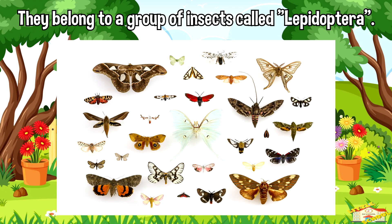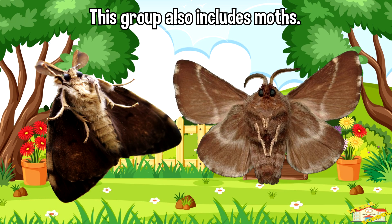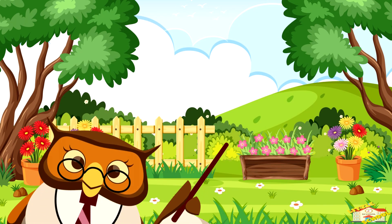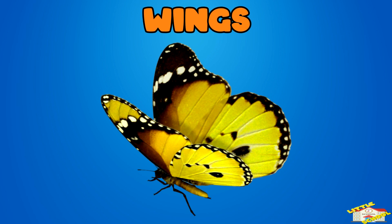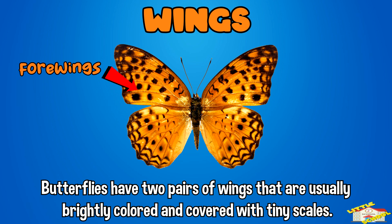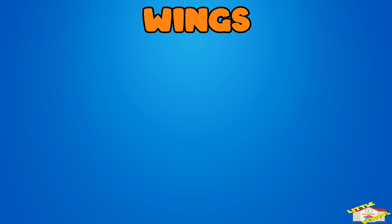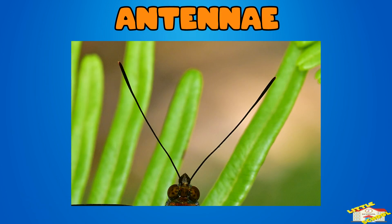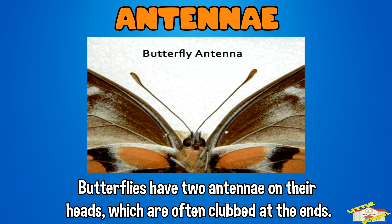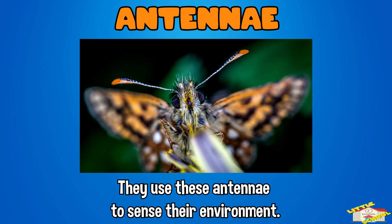They belong to a group of insects called Lepidoptera. This group also includes moths. Let's go over the physical characteristics of the butterfly. Wings: butterflies have two pairs of wings that are usually brightly colored and covered with tiny scales. These scales give butterflies their vivid patterns. Antennae: butterflies have two antennae on their heads which are often clubbed at the ends. They use their antennae to sense their environment.